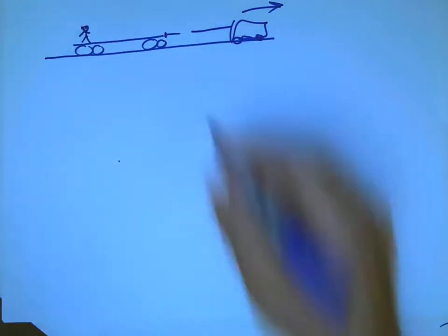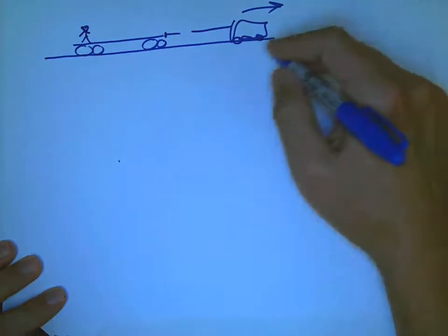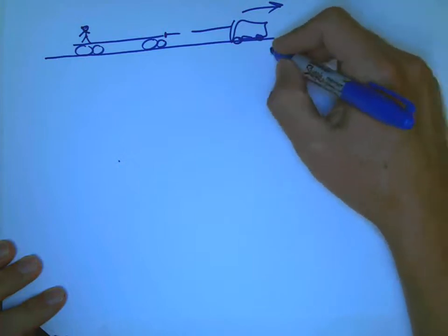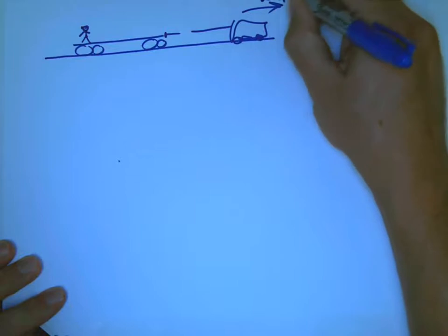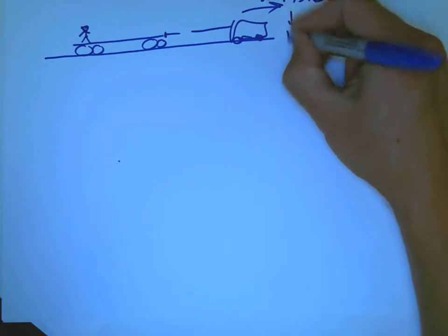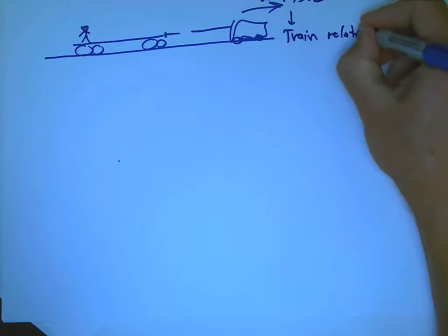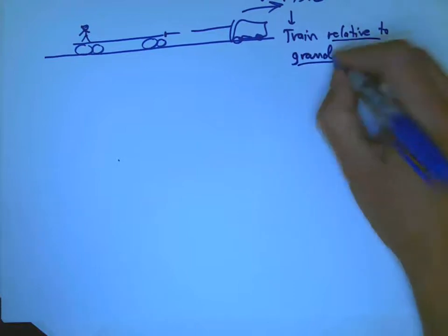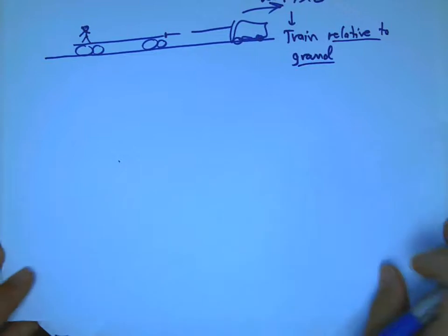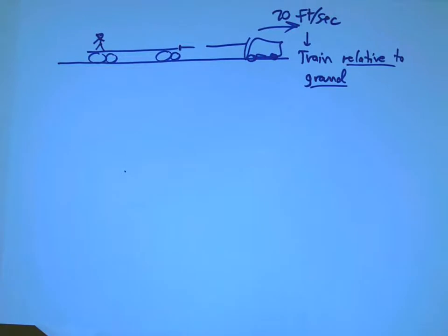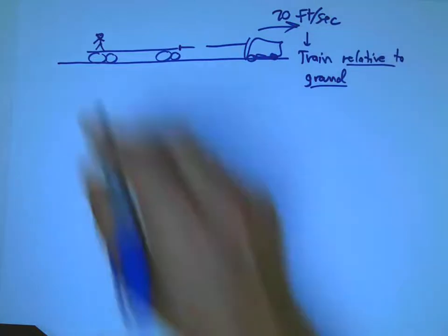What I want to figure out is if I know how fast the train is moving. Let's say the train is moving 20 feet per second, and that's the train's motion relative to the ground. Train relative to ground. The thing about motion and speed and velocity - we don't always emphasize this, but the speed or velocity of something is always a relative notion, always a relative measure.